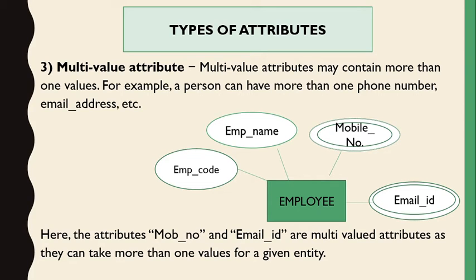The third type is multi-valued attributes. Multi-valued attributes are those attributes that contain more than one value. For example, a person or employee may have two or three mobile numbers — not a single value but multiple values. Multi-valued attributes are represented by a double ellipse. Mobile numbers and email IDs are multi-valued attributes that can take more than one value, represented in a double elliptical shape.